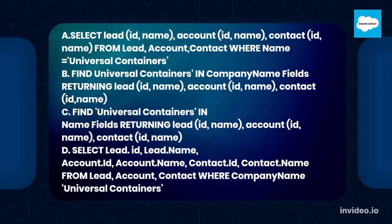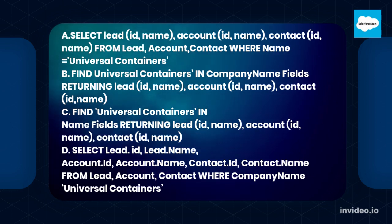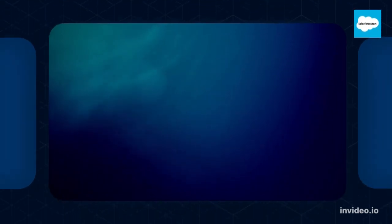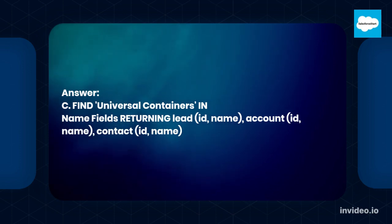B. FIND 'Universal Containers' IN company name fields RETURNING lead (id, name), account (id, name), contact (id, name). C. FIND 'Universal Containers' IN name fields RETURNING lead (id, name), account (id, name), contact (id, name).